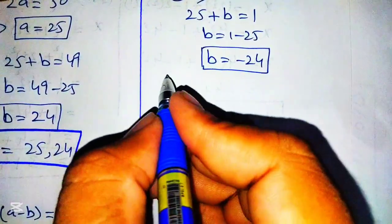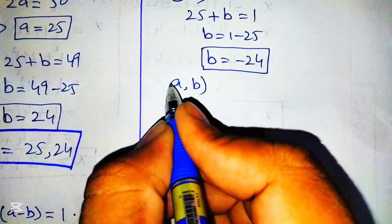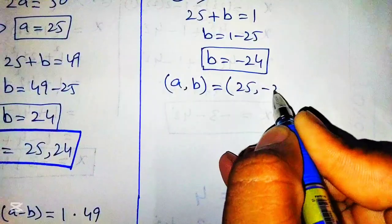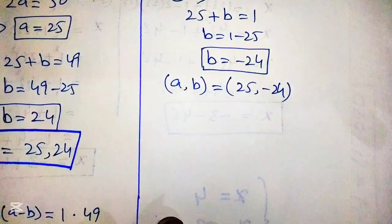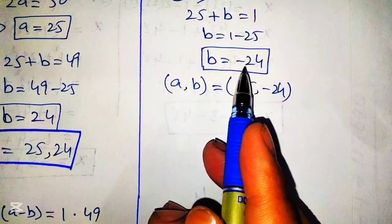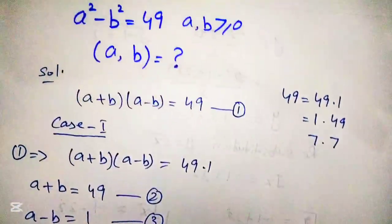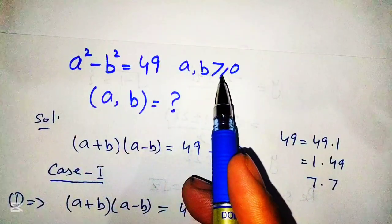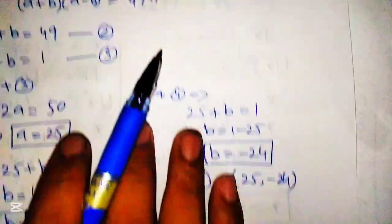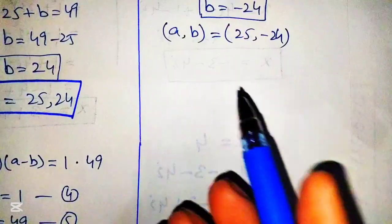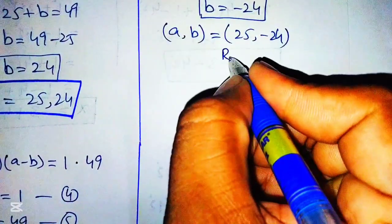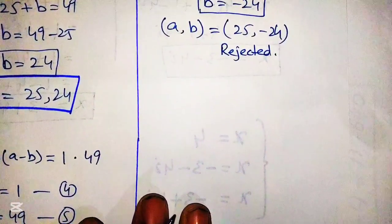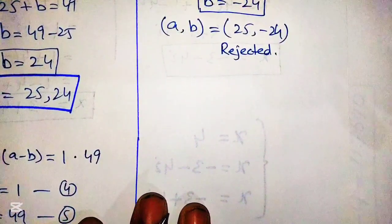The pair of solutions for Case 2 would be (a, b) equals (25, −24). However, the value of b is −24, which is negative. According to our given condition, a and b must both be greater than or equal to zero. That is why this pair of solutions is not acceptable and is rejected. The second solution is rejected.